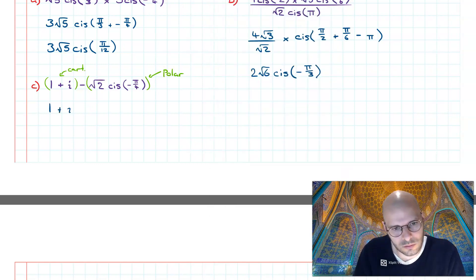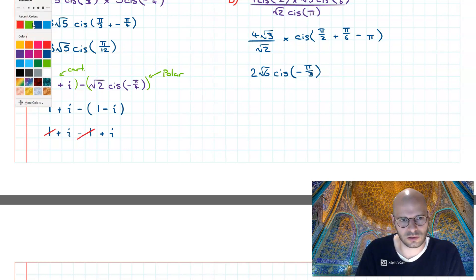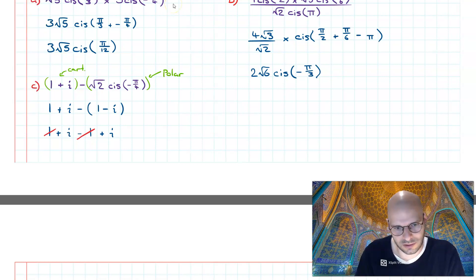Just like that, so I can see it's 1 minus i. Now looking at this, I can easily do this in my head. In this case, the ones are going to cancel, so therefore what I'm left with is simply 2i.